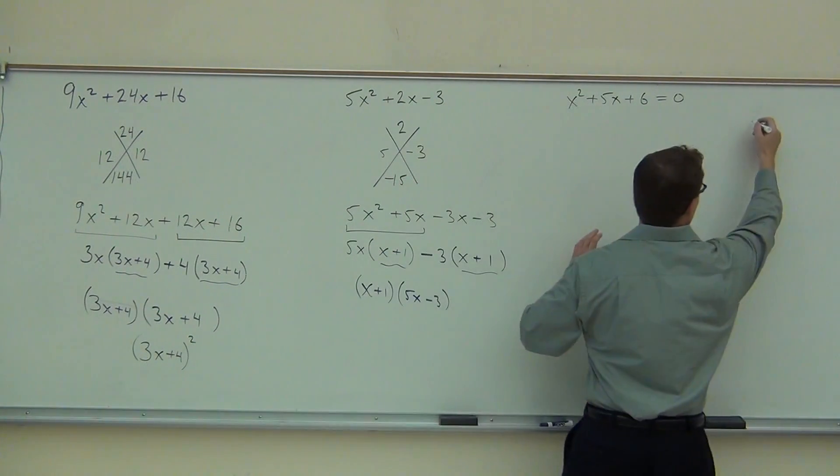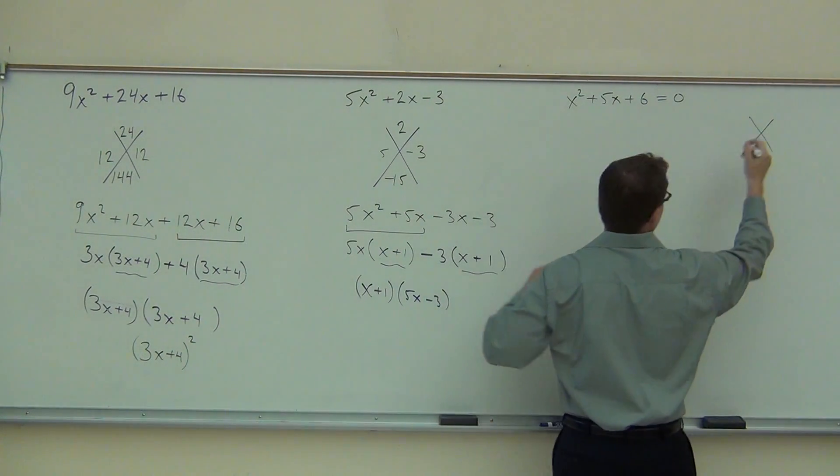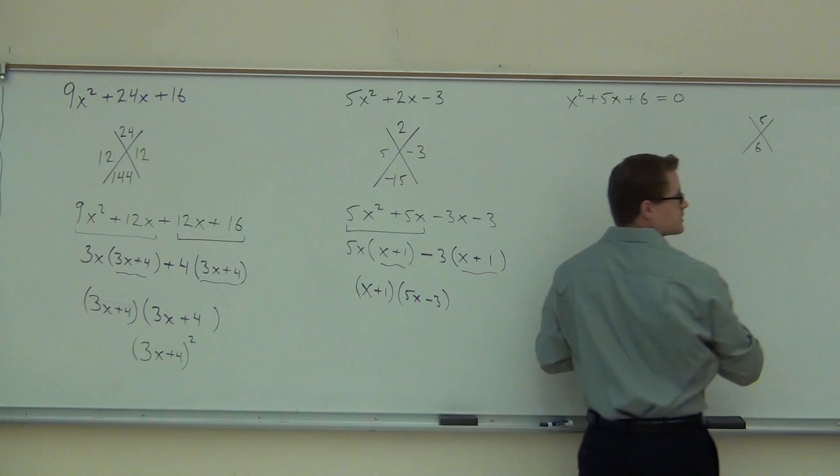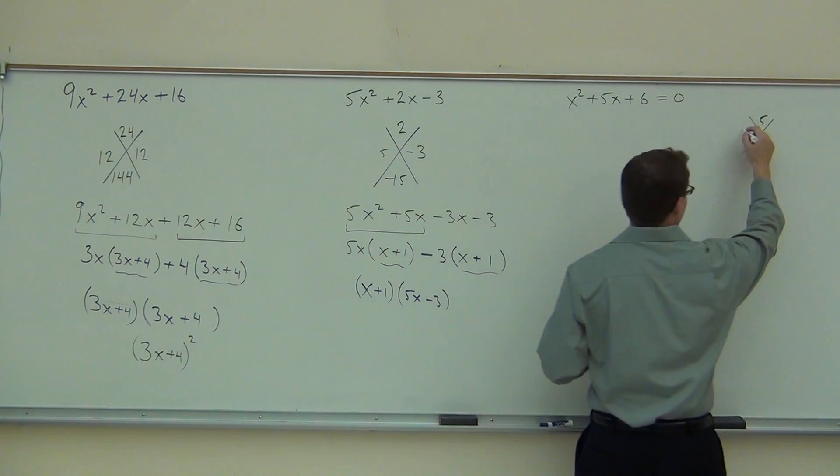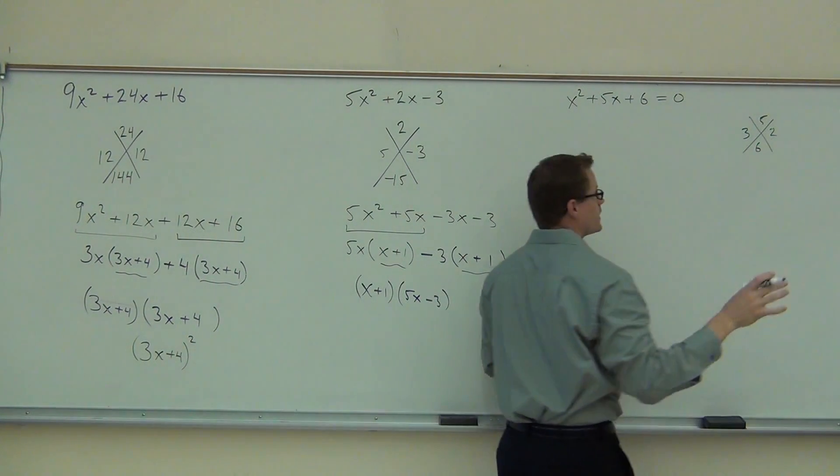We all know that the diamond problem would be here. I'm going to do the diamond problem quickly because we've already seen this. 5 goes here, 6 goes here. You with me still? We're going to get what two numbers? 3 and 2, or 2 and 3. It really doesn't matter.